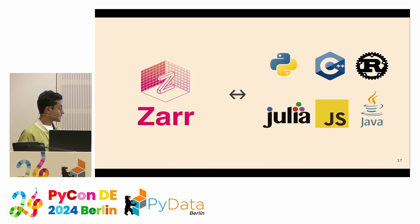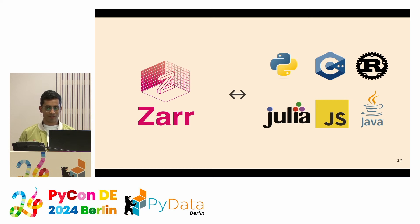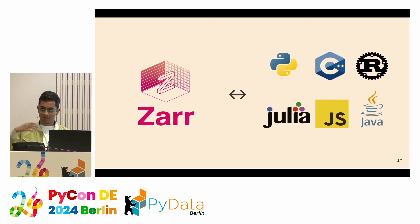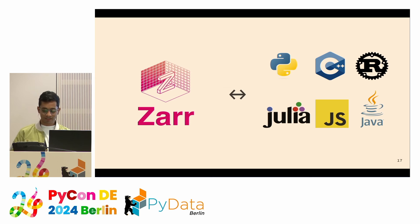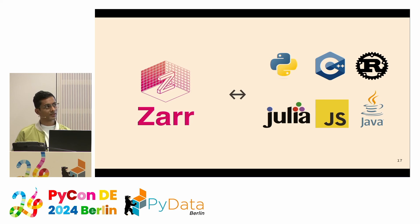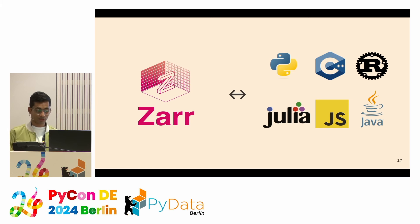The specification has implementations in all major languages. The Python community is large, so Zarr Python has the most users, but there are also implementations in C++, C, Rust, Julia, JavaScript, and Java — and implementations are growing day by day. As of today, there are three Rust implementations, two Java implementations, one Julia, and three JavaScript implementations. The community is growing really fast.